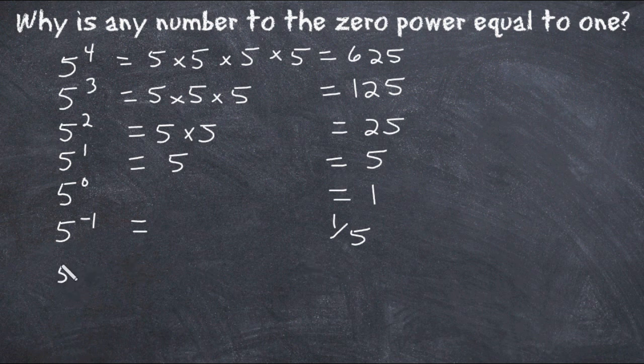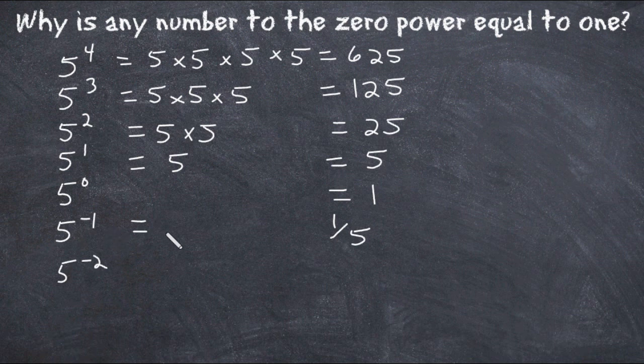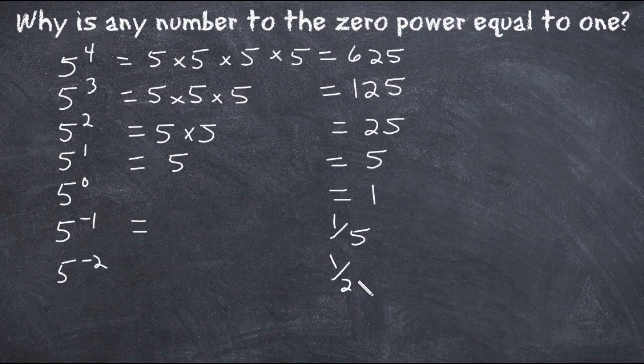And then if we solve five to the negative second power, that's going to be the previous power, five to the negative first power, divided by five. So we're going to make one fifth five times smaller, and that would give us one over 25.